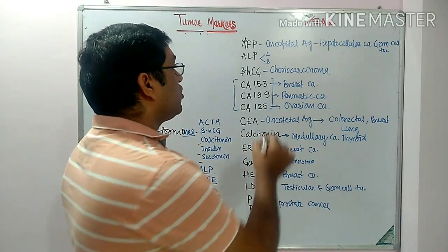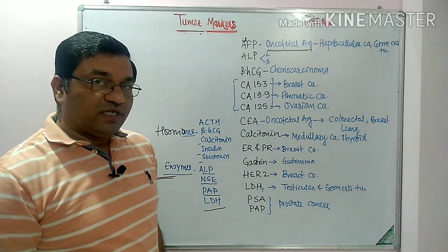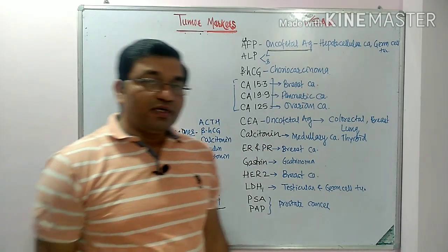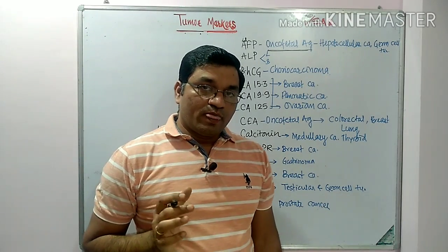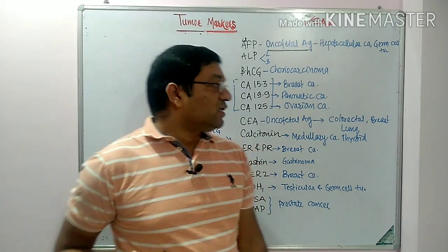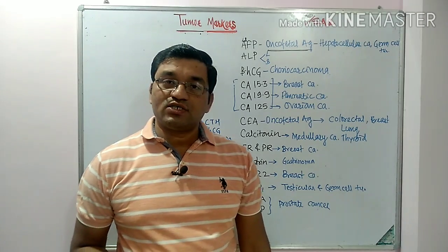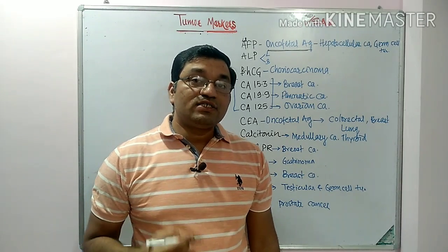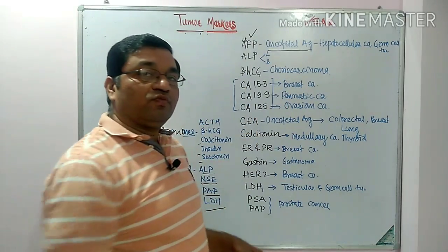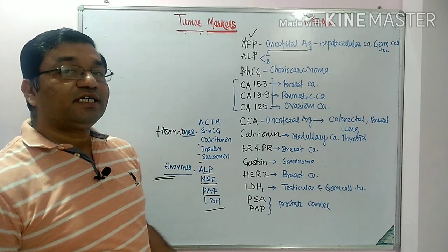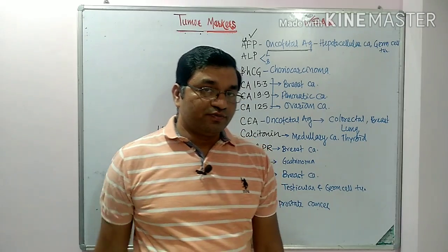Alpha-fetoprotein is an oncofetal antigen. It is produced during fetal life, but later on the concentration of alpha-fetoprotein decreases in the adult. However, whenever there is cancer of the hepatic cell (hepatocellular carcinoma) or whenever there is a germ cell tumor, the concentration of alpha-fetoprotein increases. So alpha-fetoprotein is used in the detection of hepatocellular carcinoma and germ cell tumors.